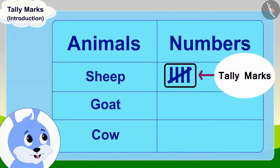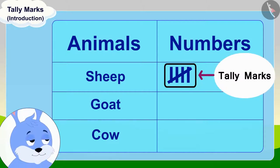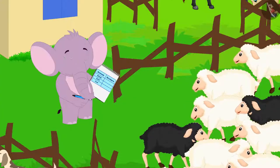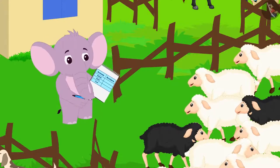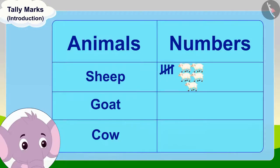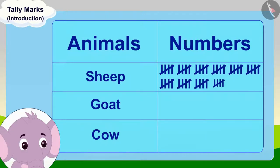For the fifth sheep, make a slant line like this on these four lines. We call these groups of five lines tally marks. You can easily count your sheep by using tally marks. Appu started counting his sheep once again according to what Bunny had said. He counted five sheep and drew tally marks, then drew them again for the next five sheep, and finished counting all his sheep.